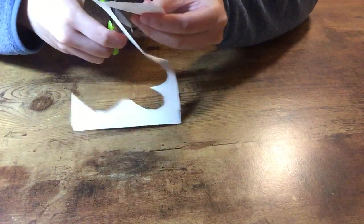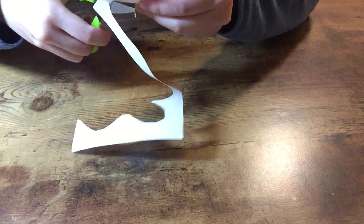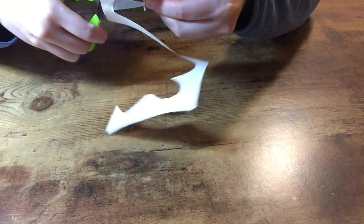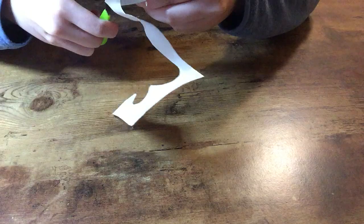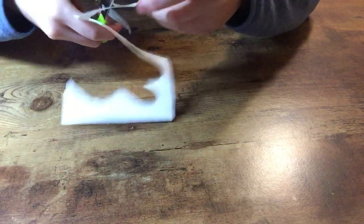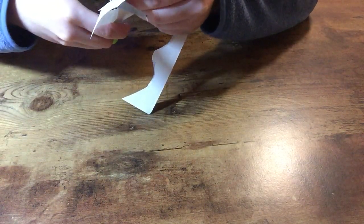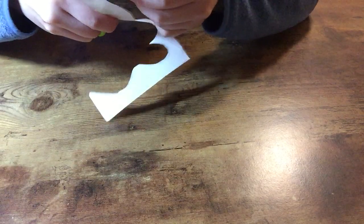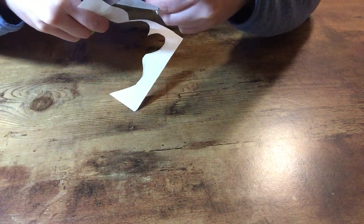If you had a plastic bag or one of those sandwich bags, you could do this on a sandwich bag and it would make the wings be transparent. But I just have paper.